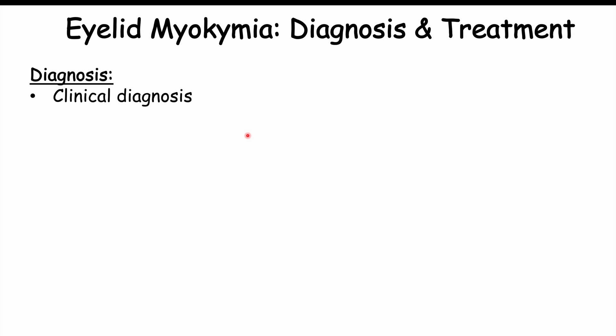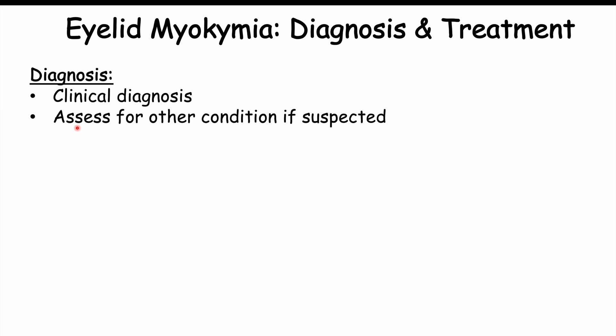Eyelid myokymia is a clinical diagnosis. Seeing a twitching eyelid along with relevant triggers, with no other signs or symptoms, is enough to make the diagnosis. It is possible to assess for other conditions if they are suspected, as eyelid myokymia can be an early sign of conditions like multiple sclerosis or other autoimmune conditions.